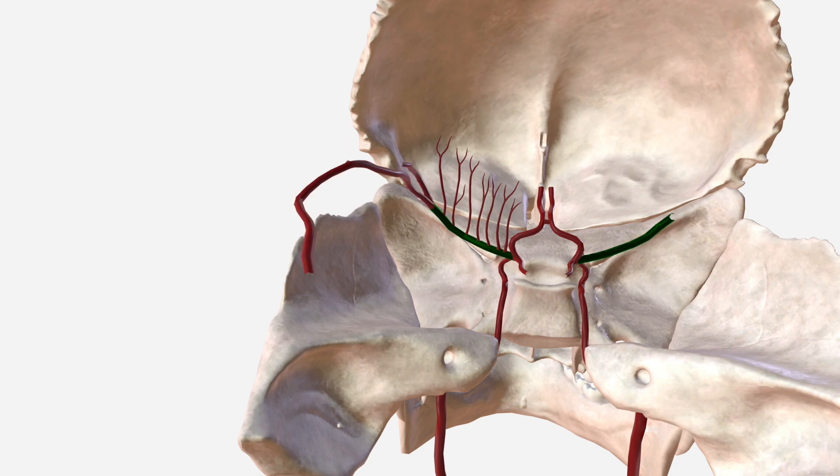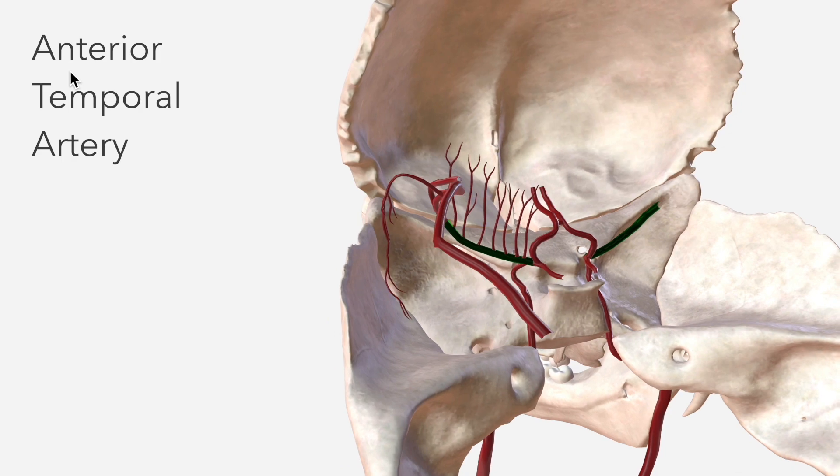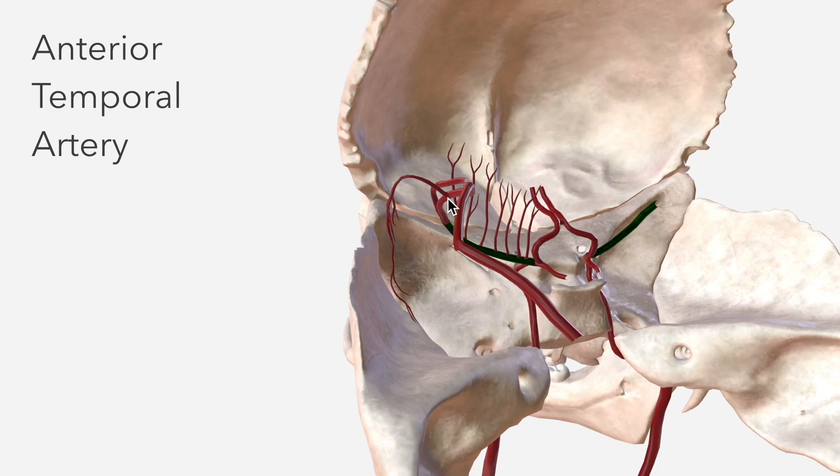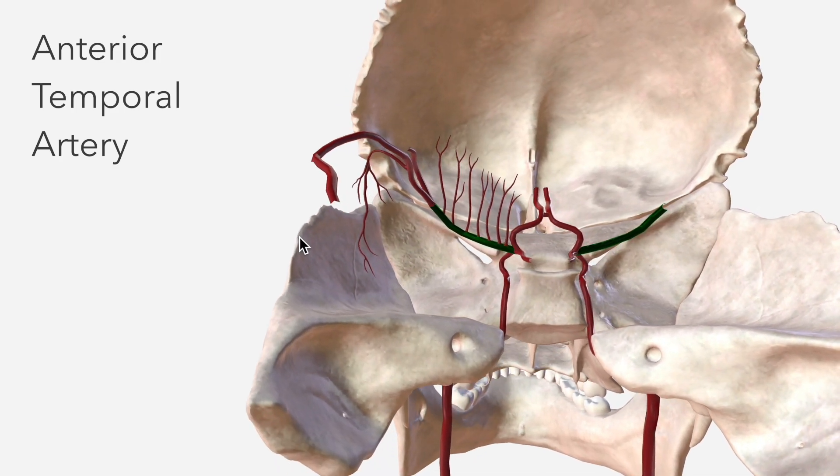Let's bring in the superior and inferior terminal branches. The other artery which departs from M1 is the anterior temporal artery. In this model it departs from the inferior terminal branch.